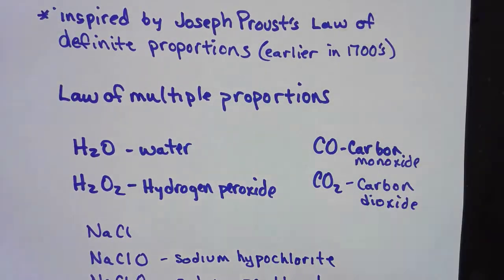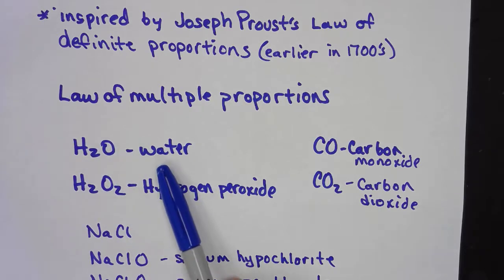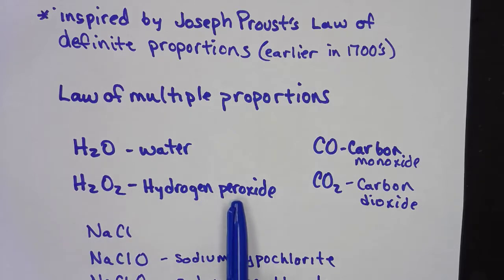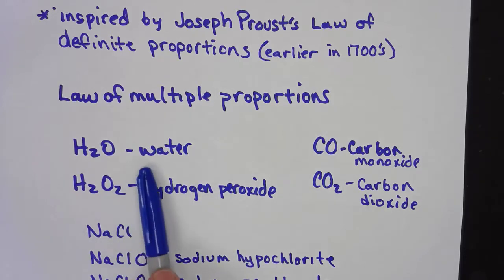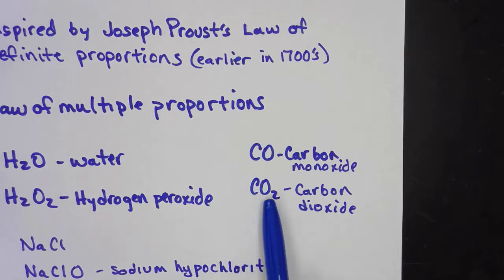Another thing that Dalton came up with was what we call now the law of multiple proportions. See, he discovered that things like hydrogen and oxygen could make more than one compound. Here, we can turn hydrogen, we've got hydrogen and oxygen making water. We've got another combination of hydrogen and oxygen making hydrogen peroxide. Similar, but different. We have carbon and oxygen. If it's one of each, it's carbon monoxide. If it's one to two, carbon dioxide. Similar, but different.